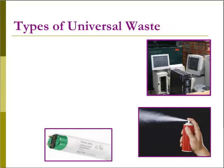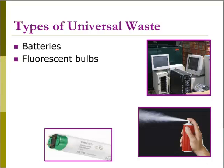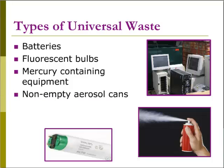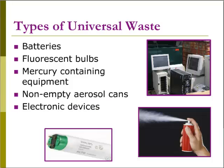There are many types of universal waste: batteries, fluorescent bulbs, all items containing mercury including thermometers, non-empty aerosol cans, electronic devices, and cathode ray tubes.